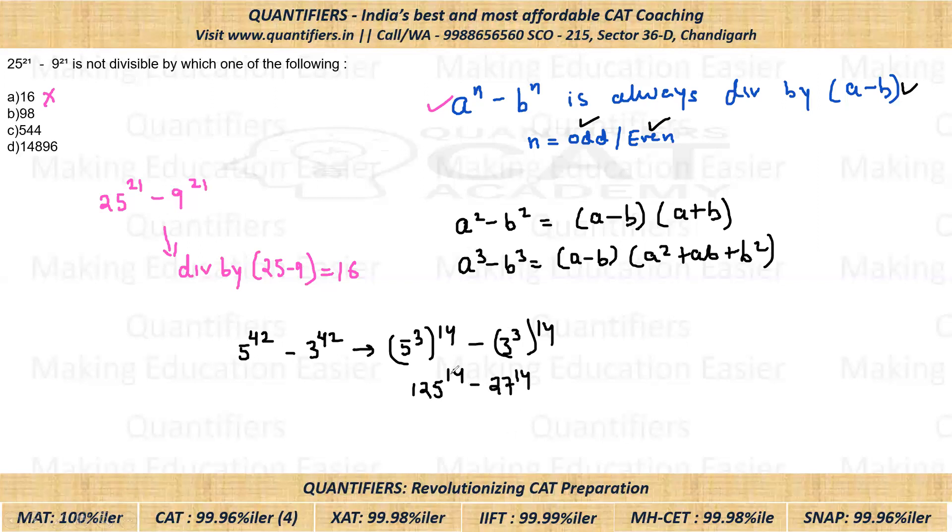Now again students, you can see this is of the form a to the power n minus b to the power n. So if we apply our concept, a to the power n minus b to the power n is always divisible by a minus b, we can say definitely this thing will be divisible by 125 minus 27, which is 98. So this is also divisible by 98. And since this is also divisible by 98, 98 also cannot be our answer. Okay students, I hope till here it is clear to everyone.